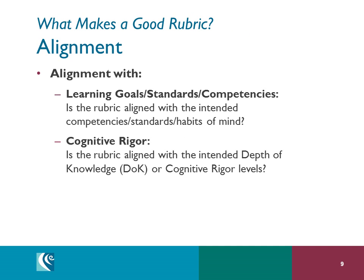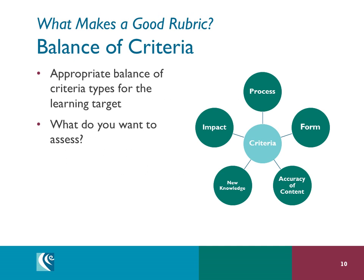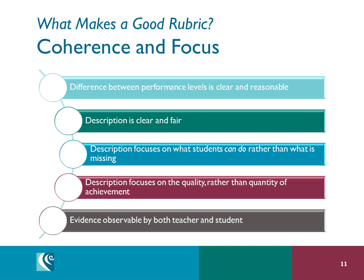We've talked about what makes a rubric, but what makes a good rubric? We refer to these as quality criteria — the elements you look for to know that a rubric is strong. These are the criteria we'll be referring to later when tuning rubrics. First, we take a look at alignment. Ask yourself: is the rubric, especially the proficiency column, aligned with the intended learning targets? Is it aligned both in terms of content and the level of cognitive rigor? Now we'll look at the balance of criteria — are the criteria types chosen appropriate?